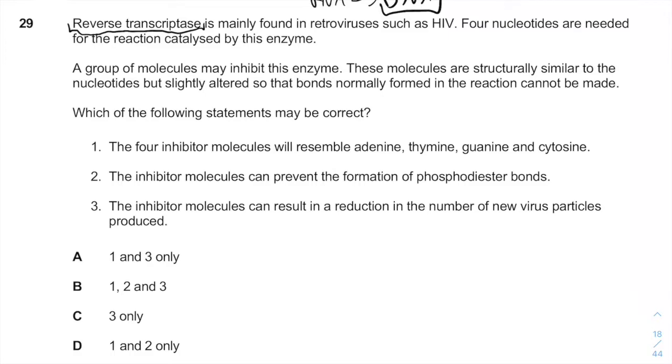A group of molecules may inhibit this enzyme. These molecules are structurally similar to the nucleotides but slightly altered so that the bonds normally formed in the reaction cannot be made. The bonds normally forming the reaction are phosphodiester bonds.